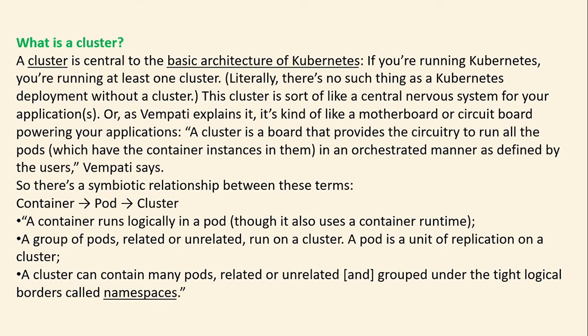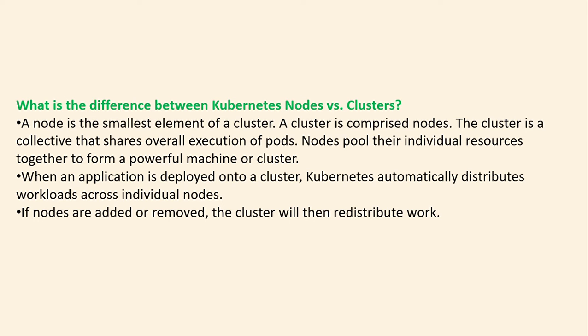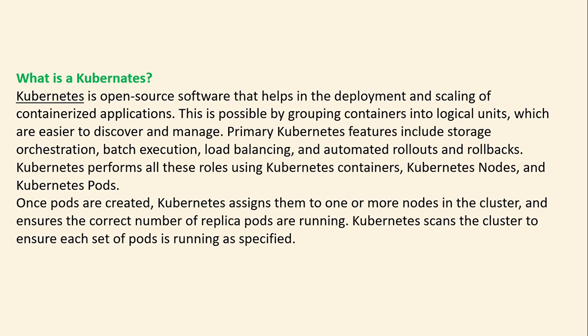A cluster can contain many pods, related or unrelated, grouped under logical borders called namespaces. So what is the difference between Kubernetes nodes versus a cluster? A node is the smallest element of a cluster. A cluster is comprised of nodes. The cluster shares overall execution of pods. Nodes pool their individual resources together to form a powerful machine — the cluster. When an application is deployed on a cluster, Kubernetes automatically distributes workload across individual nodes. If nodes are added or removed, the cluster will redistribute work.